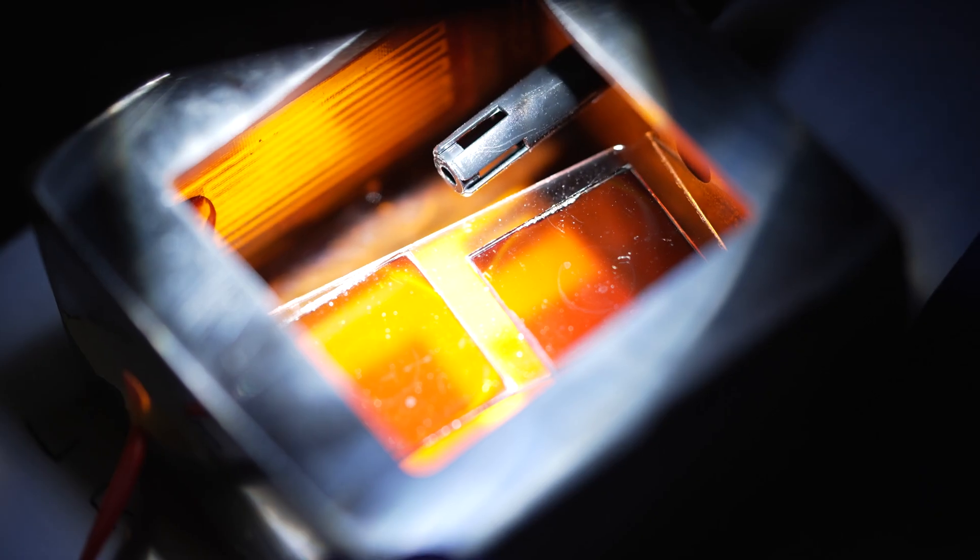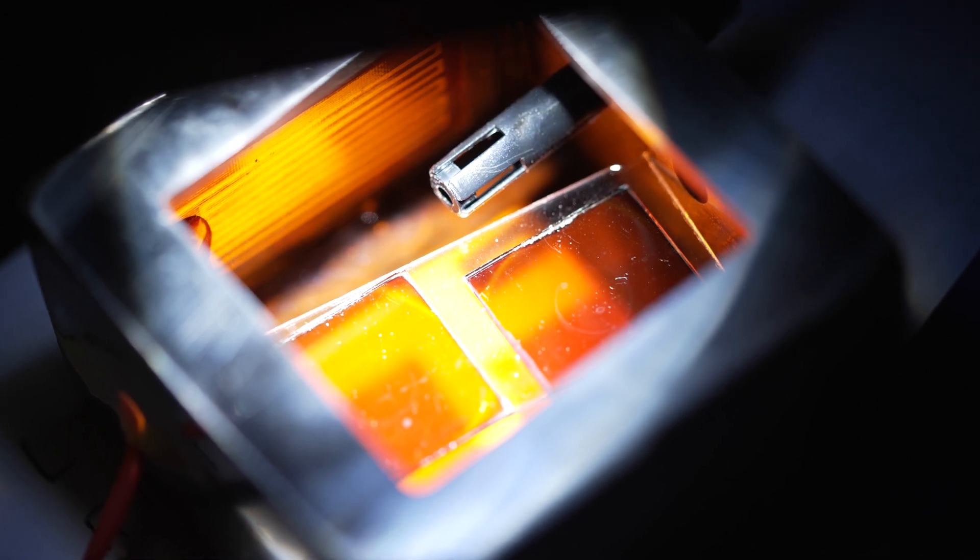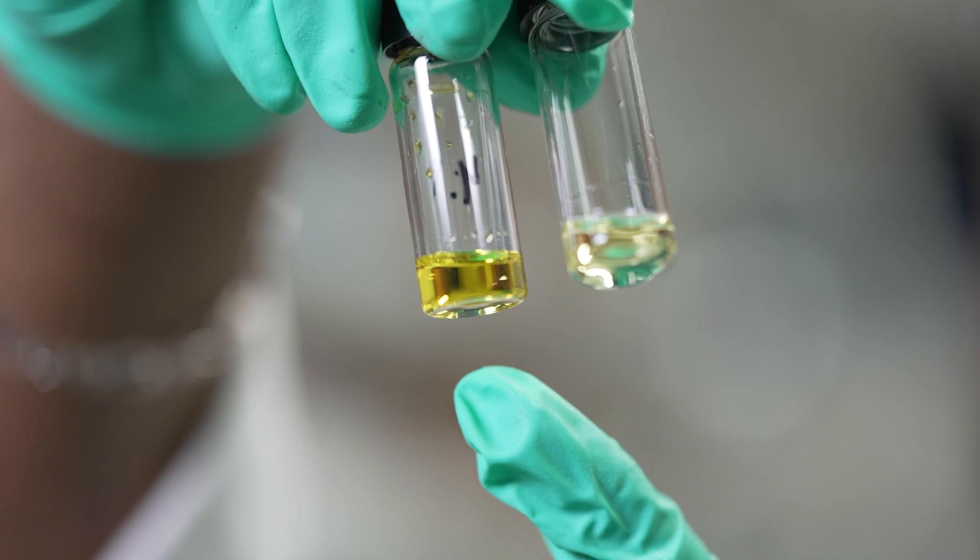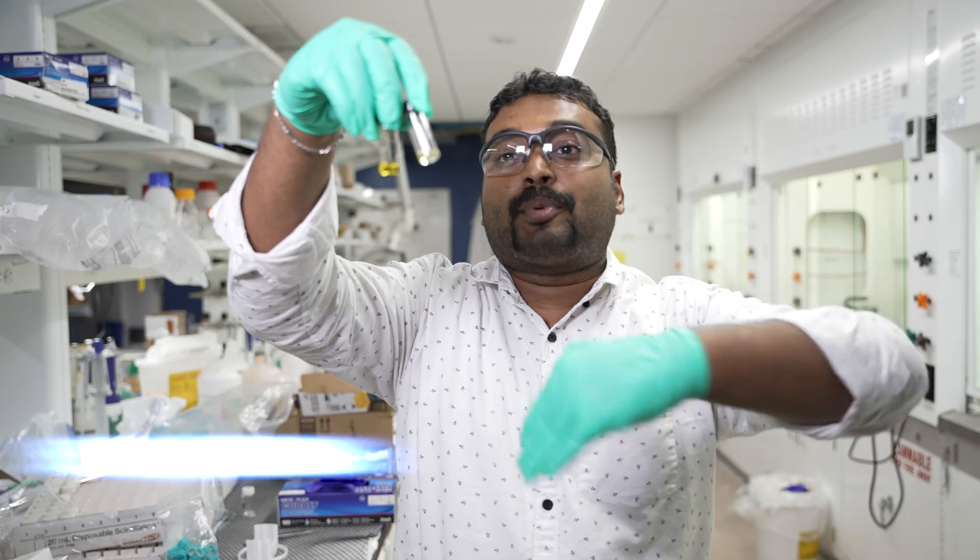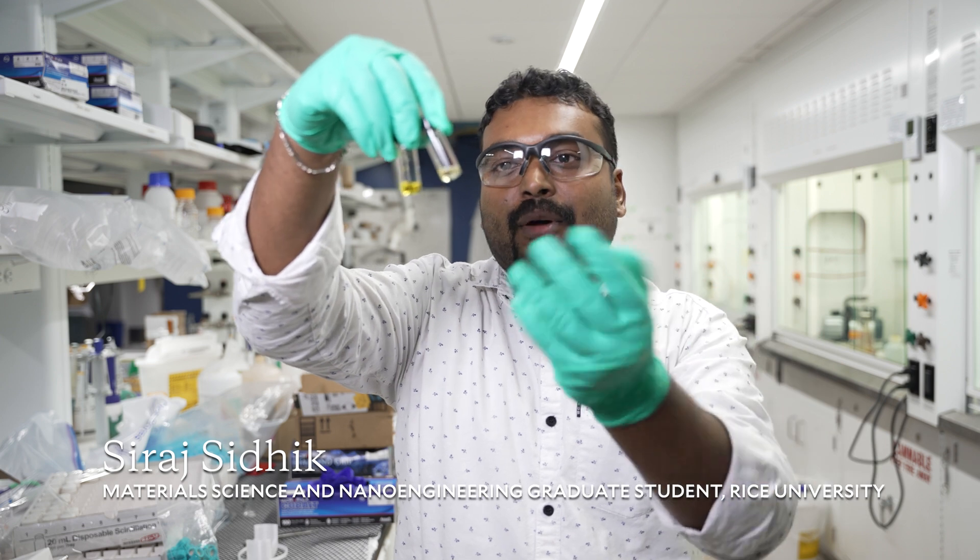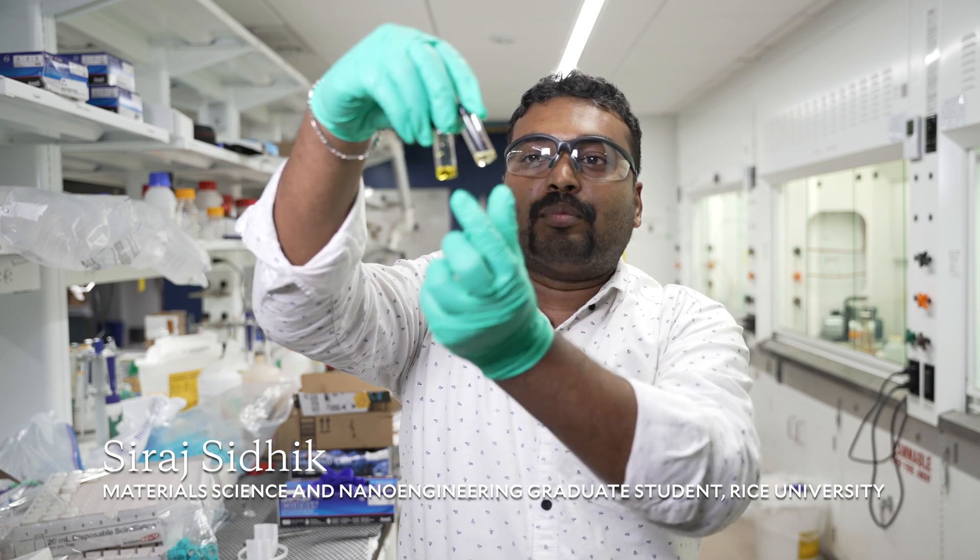This is the 3D perovskite—that's the bottom layer—and there's a 2D perovskite that grows on top which protects the perovskite. Another major problem is that both usually dissolve in the same solvent, so it is difficult to grow these two films together.